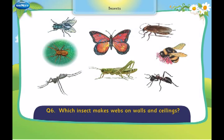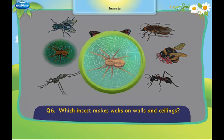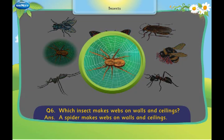Which insect makes webs on walls and ceilings? A spider makes webs on walls and ceilings.